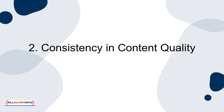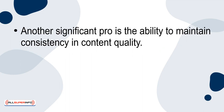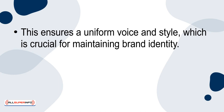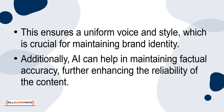Second: Consistency in Content Quality. Another significant pro is the ability to maintain consistency in content quality. AI algorithms can analyze and learn from existing content, applying the same quality standards to new creations. This ensures a uniform voice and style, which is crucial for maintaining brand identity. Additionally, AI can help in maintaining factual accuracy, further enhancing the reliability of the content.